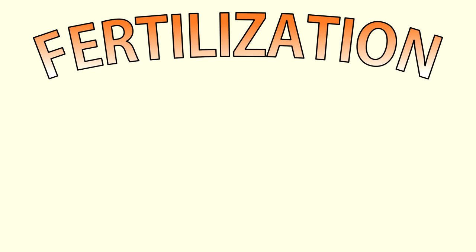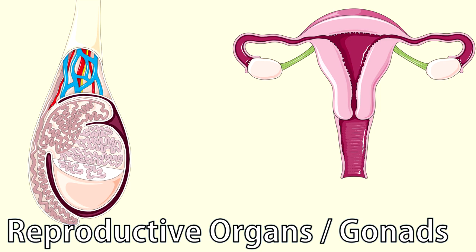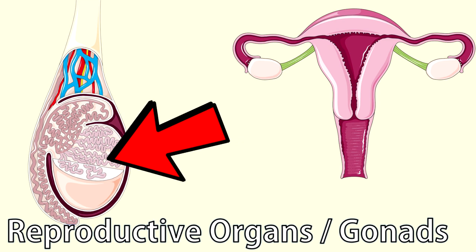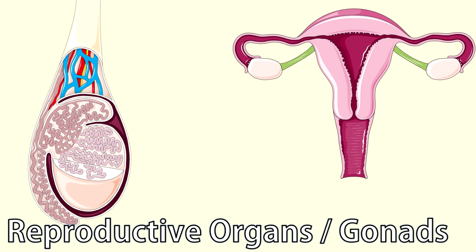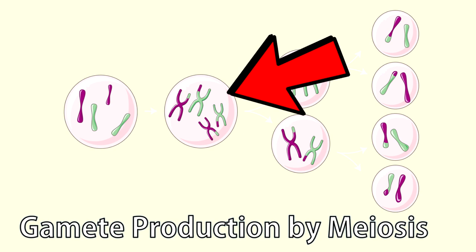Fertilization occurs as sex cells, produced by your parents, fuse together to produce a zygote. These sex cells, also called gametes, are made in the gonads, which are specialized body structures used in reproduction. The male gonads are the testes, while the female gonads are the ovaries. Gonads produce gametes following a special division called meiosis. Meiosis is really important for two reasons: first, it scrambles your parents' genetic information, or DNA, to increase diversity and prevent genetic diseases. Second, it divides the information in half, so that it can be combined with another gamete later on.